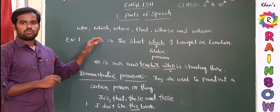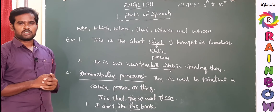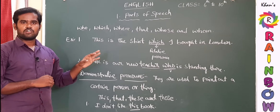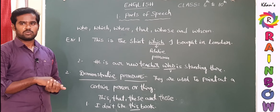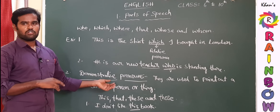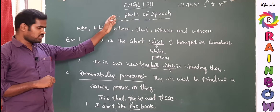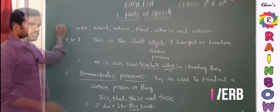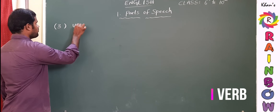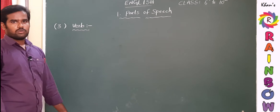These two types — relative and demonstrative pronouns — will appear again in your academic course. Especially for ninth and tenth class students, these will come in your textbooks as well. Your home task is to practice more statements using demonstrative pronouns as well as relative pronouns. Coming to the third part of speech among the eight — the third one is Verb.